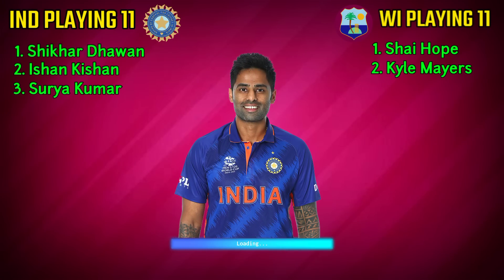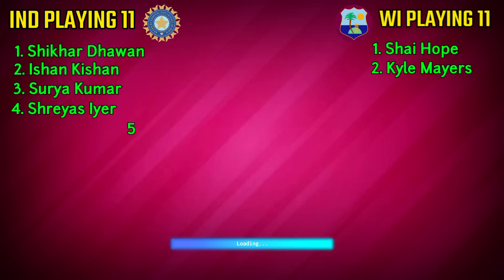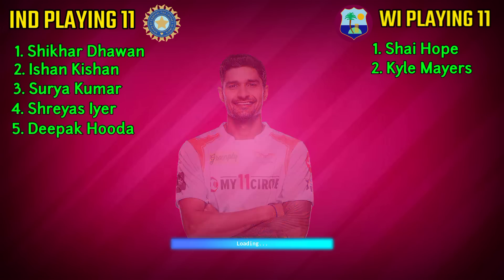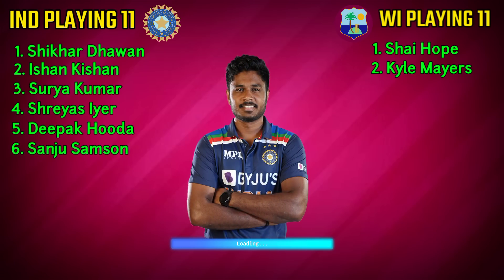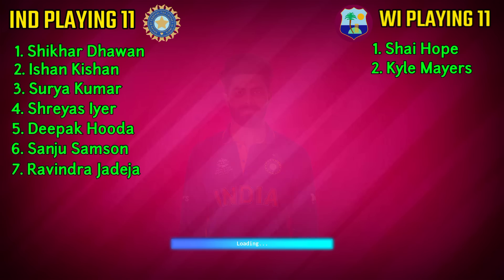India team middle order: No.3 Suryakumar Yadav, right-handed batsman. No.4 Shreyas Iyer, right-handed batsman. No.5 Deepak Hooda, all-rounder. No.6 Sanju Samson, wicketkeeper. No.7 Ravindra Jadeja, all-rounder.